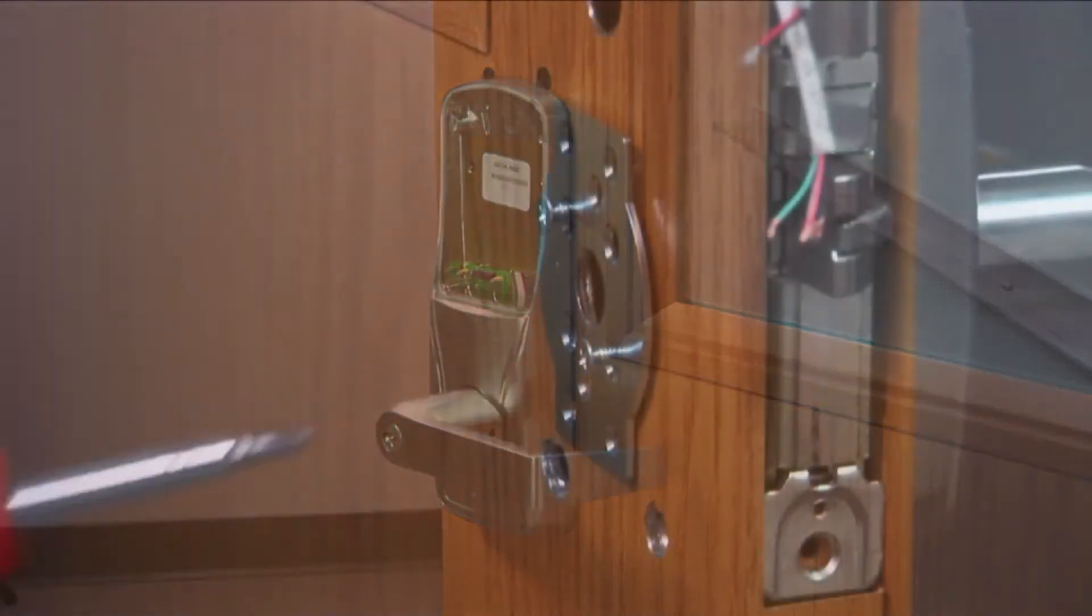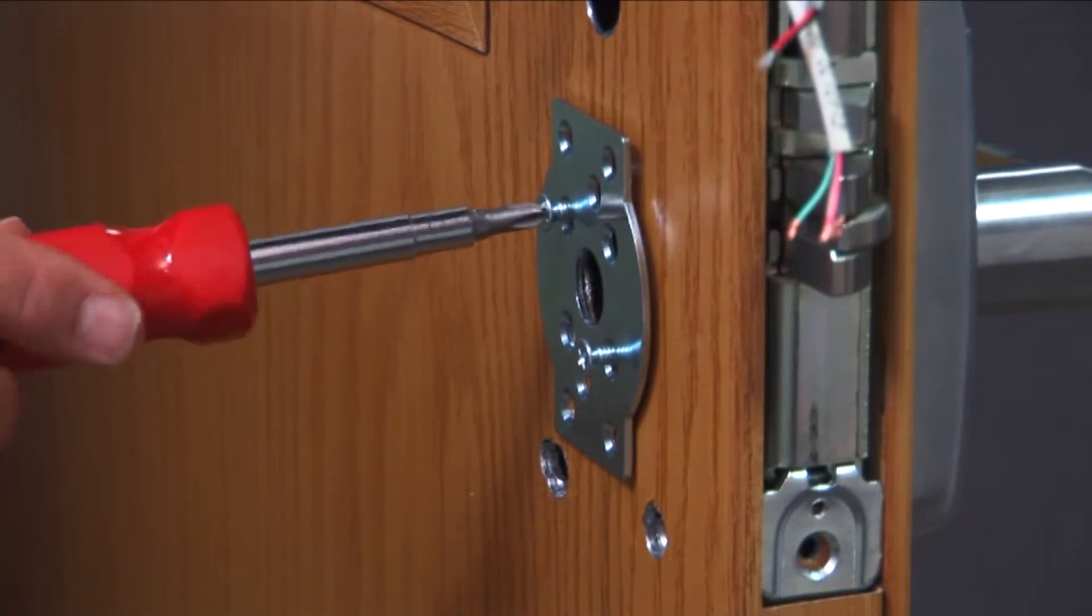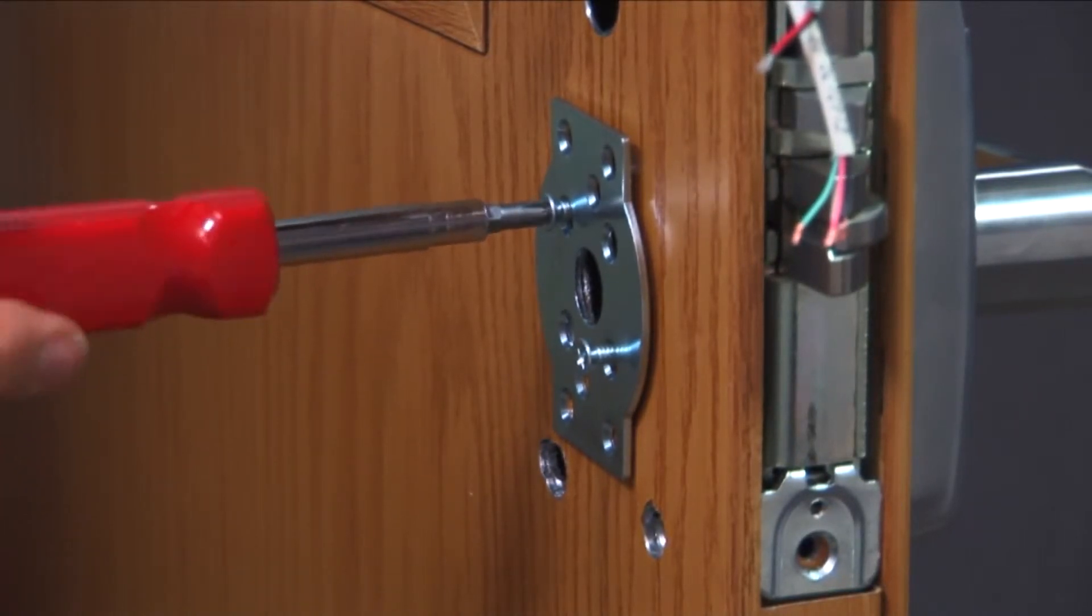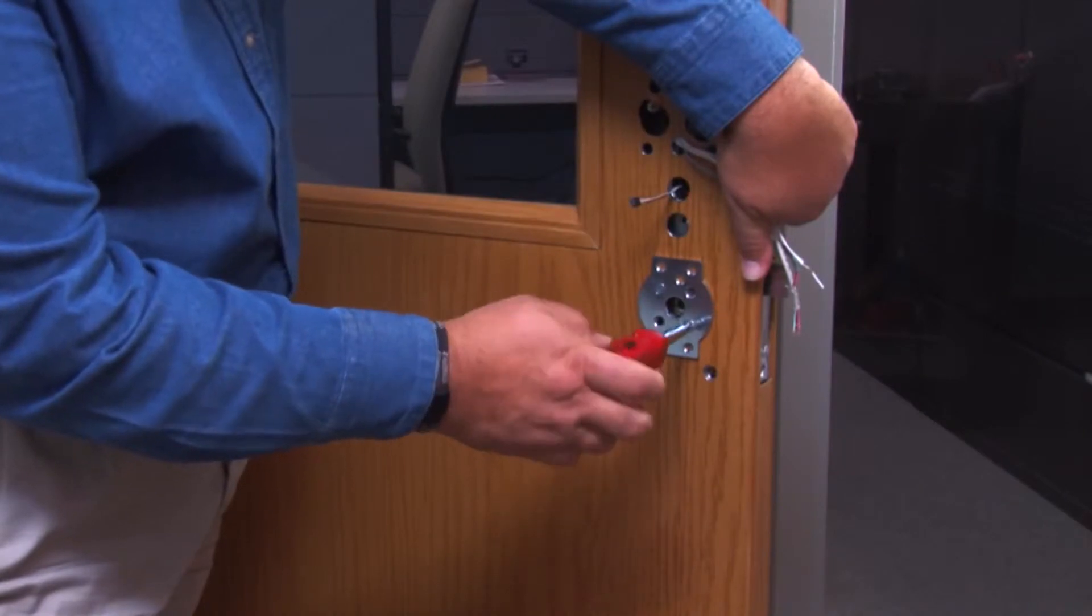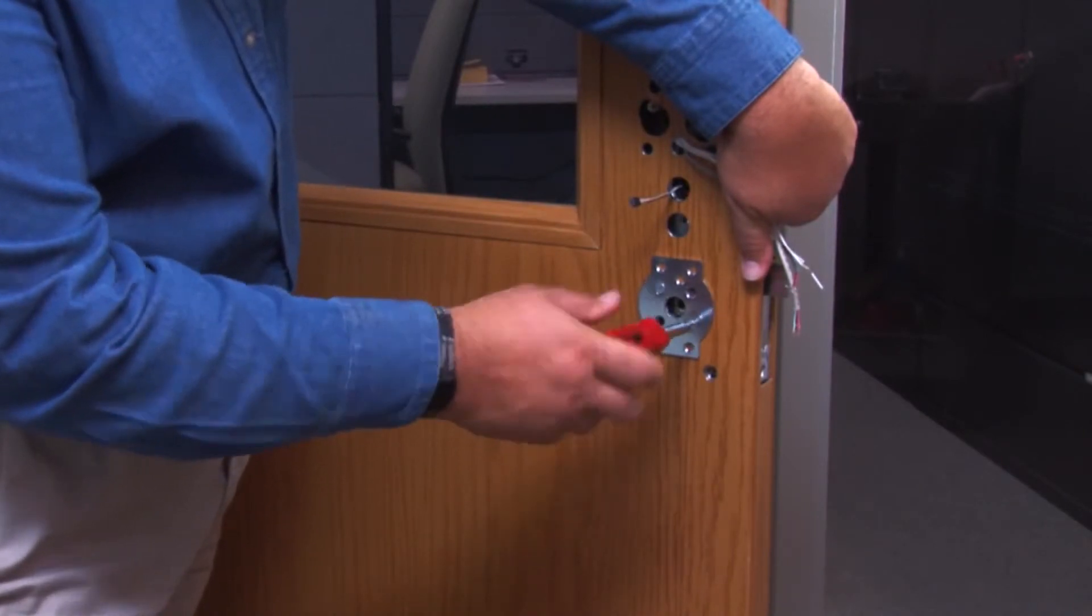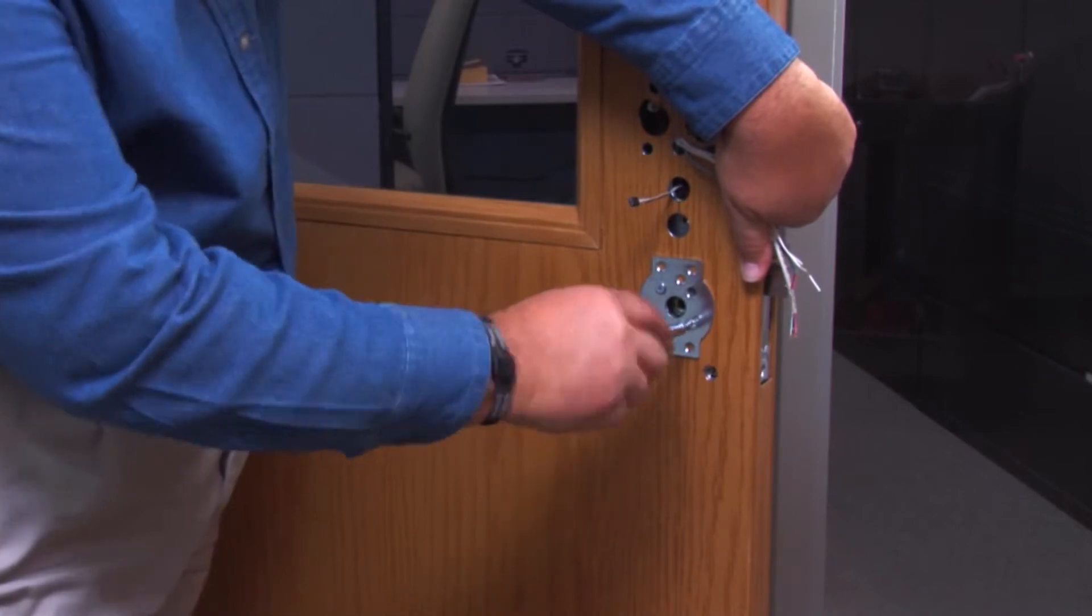Now that the outside assembly is in position, attach the anti-rotational plate. Center the plate vertically over the latch retractor on the inside of the door. Insert the two countersunk screws through the top and bottom holes into the center prongs and tighten.